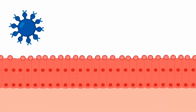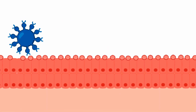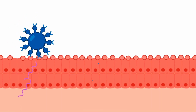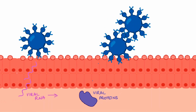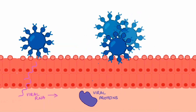There are hemagglutinin receptors on the virus that will then bind onto the target proteins on the epithelial cells. The virus then enters the cell using a fusion protein, allowing it to release its genetic material, which is a single-stranded RNA. This genetic material will then be converted into viral proteins, and here the virus can multiply and eventually spread into the nearby lymph nodes.